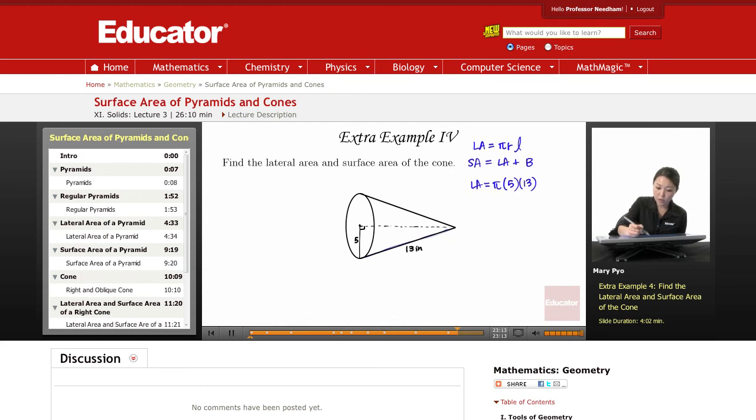So on your calculator, you're going to multiply out pi times 5 times 13. And I get 204.20 inches squared. It's area, so make sure it's unit squared.